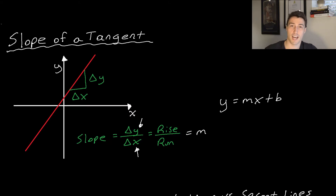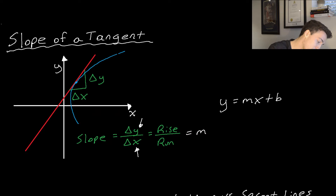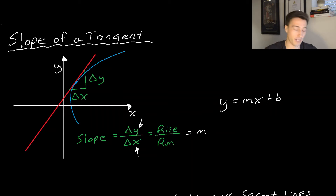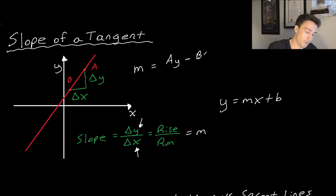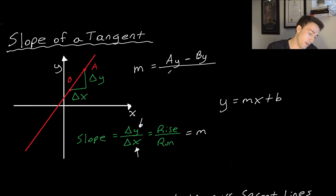A tangent line is a straight line that most resembles a graph at a certain point. So if we have a function, at a given point, the red line would represent the tangent line at that point. It's a straight line that most resembles the graph near a point. We could say one point is a and another is b, and the slope would be (a_y − b_y) / (a_x − b_x).